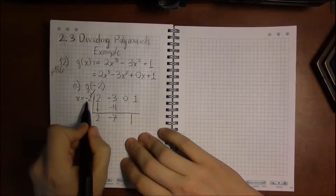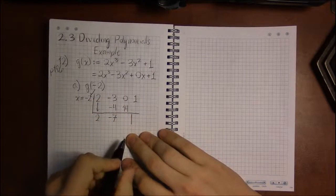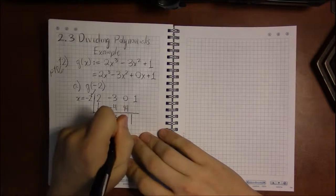Multiply to get back up, minus 2 times minus 7 is going to be a plus 14, add 0 and 14 to get 14.